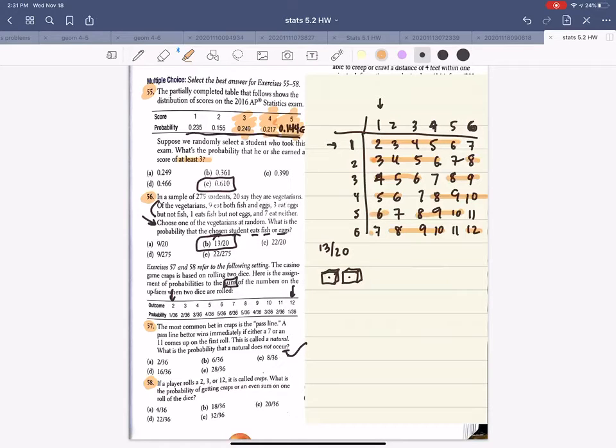So we learned that word not means the complement. So we could do one of two things. We could actually count up all the ways for this not to occur. So let's say I get out my highlighter. These are not a 7. These are not a 7 or an 11. These are all the ways I can get not a 7 nor an 11.